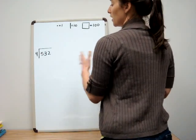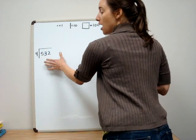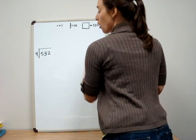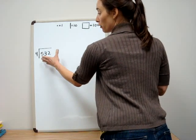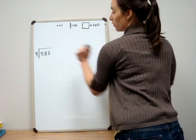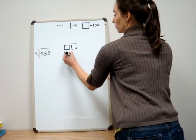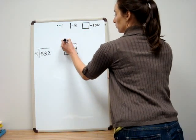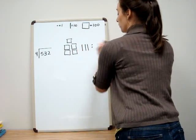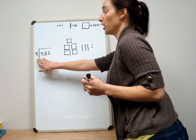Our first step is to think about what's happening in division. I have 532 and I'm trying to divide it up amongst four groups. So I'm going to start by drawing 532 and then divvy that up into four equal groups.